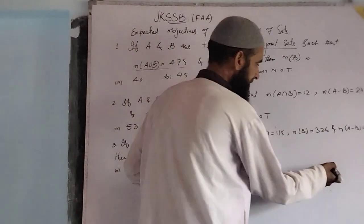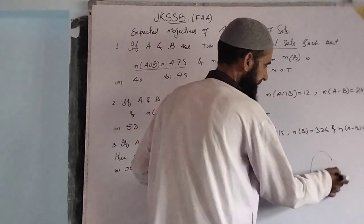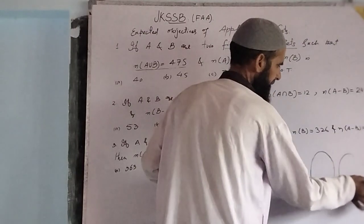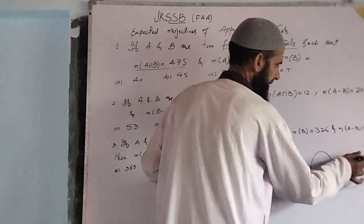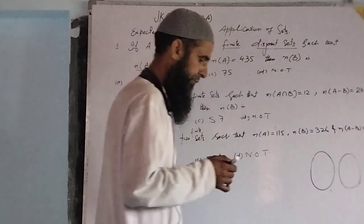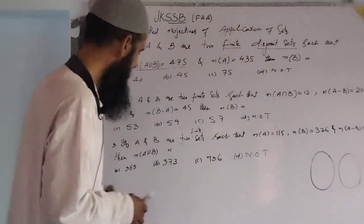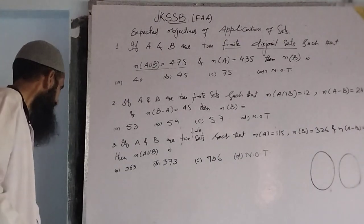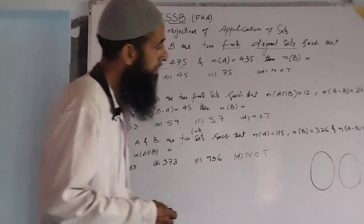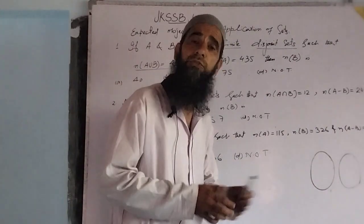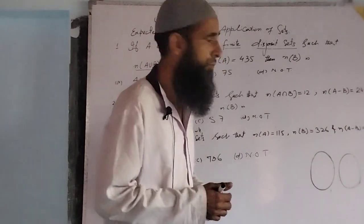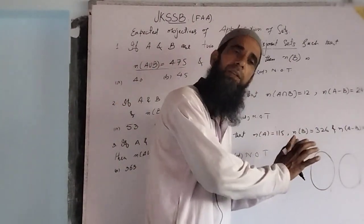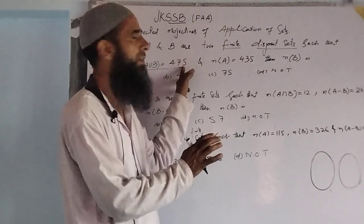Taking these as two disjoint sets, this is A and this is B. These are the two given sets dear students. In the union set we have 475 elements.